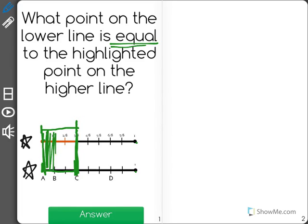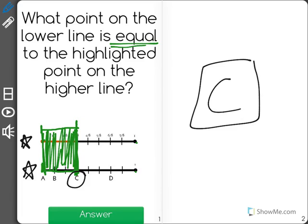As you can see, both the upper and lower line have the same amount highlighted now, showing us that point C would be equal to the highlighted part on the upper line.